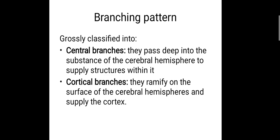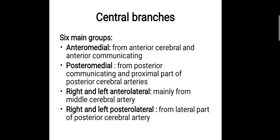The branching pattern of the circle of Willis is grossly classified into two types: central branches and cortical branches. Central branches pass deep into the substance of the cerebral hemisphere to supply the structures within it, while cortical branches ramify on the surface of the cerebral hemispheres and supply the cortex. The central branches form six main groups: the anteromedial group, posteromedial group, and the right and left anterolateral, and right and left posterolateral groups.